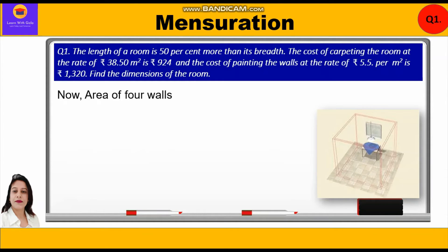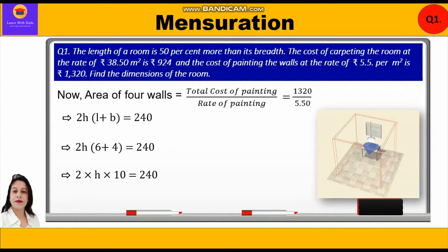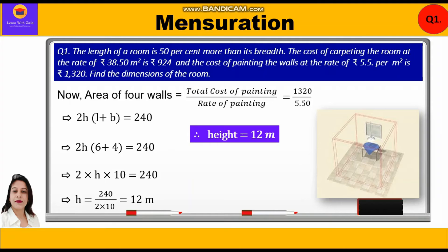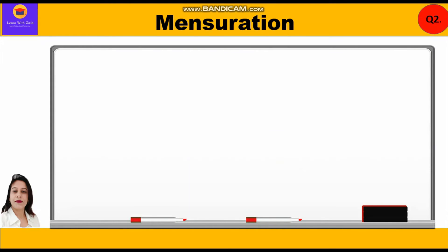Area of four walls equals total cost of painting divided by rate of painting: 1320 ÷ 5.50 = 240 meters square. Using the formula 2H(L + B) = 240, substituting: 2 × H × (6 + 4) = 240, so 2 × H × 10 = 240, giving H = 240/20 = 12 meters. So height is 12 meters. We calculated length and breadth from the carpet area, and height from the area of the four walls.